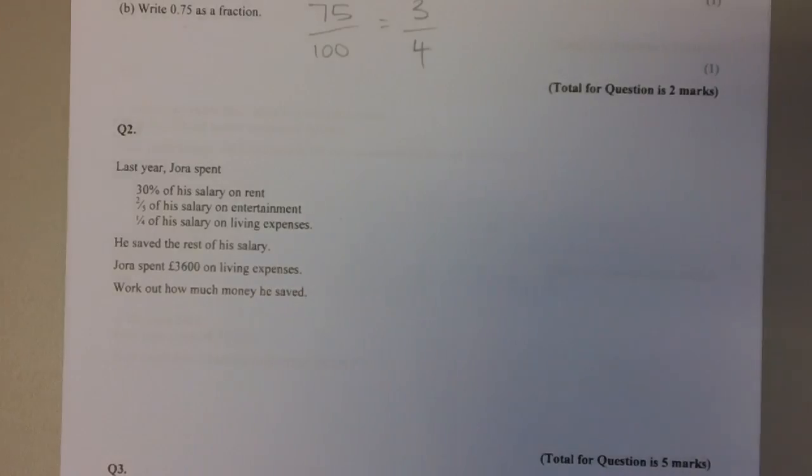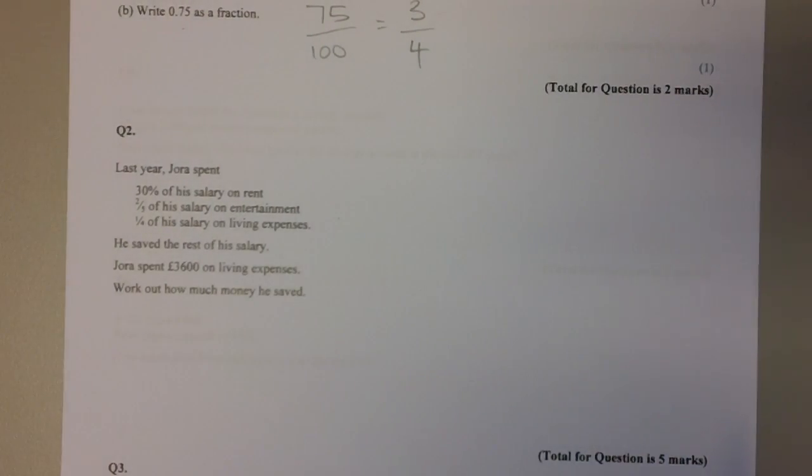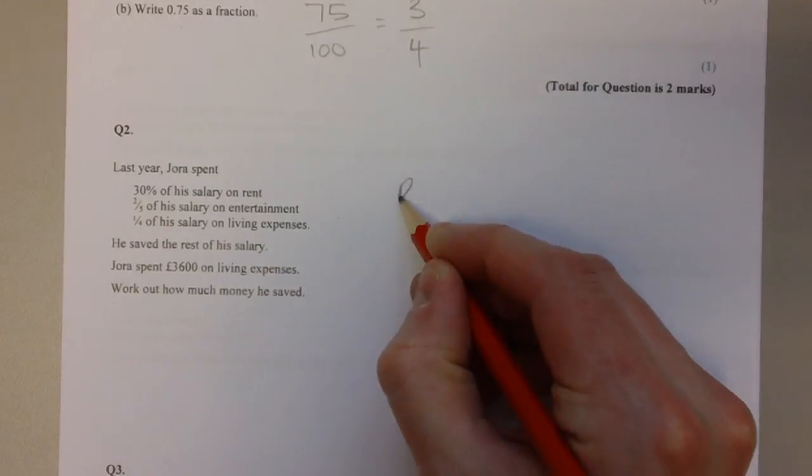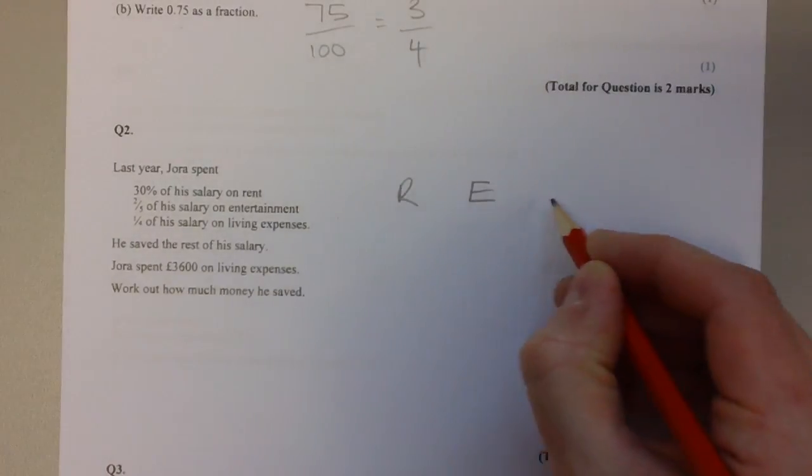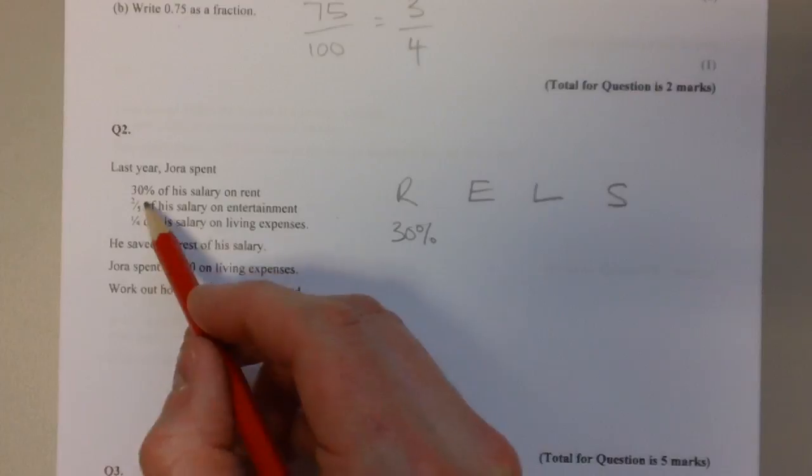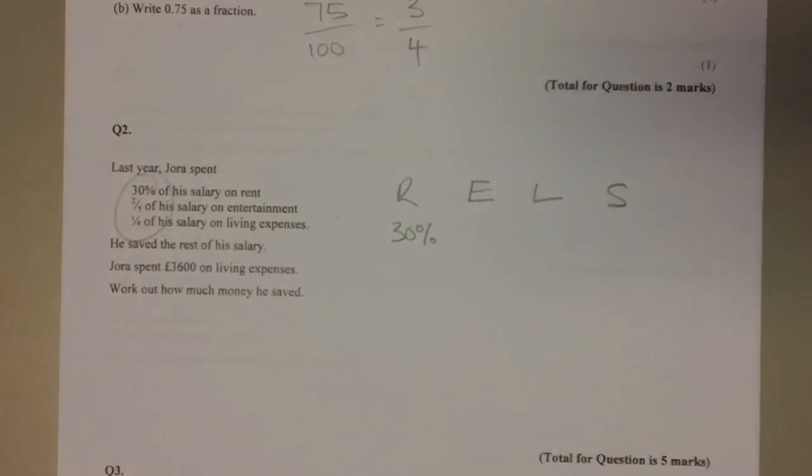Question number two: Last year Jorah spent 30% of his salary on rent, two-fifths of his salary on entertainment, and one quarter of his salary on living expenses. He saved the rest of his salary. Jorah spent £3,600 on living expenses. Work out how much money he saved. It's important that you set your workings out nice and clearly. In this particular question, the fact that you've got a mixture of fractions and percentages doesn't help. It's easier to convert them.